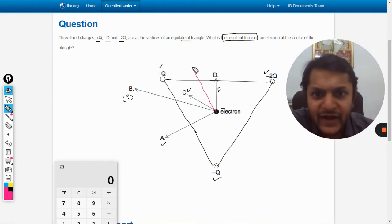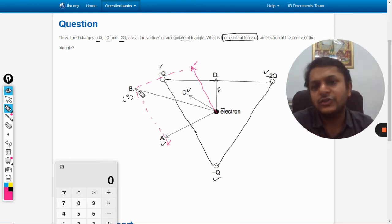From our vectors knowledge, this vector and this vector, these two will create another resultant vector here. So this is going to be the resultant force.